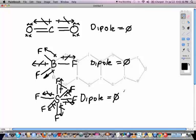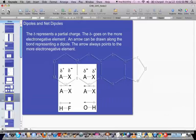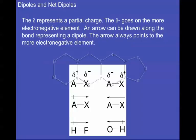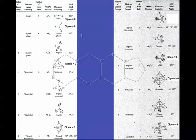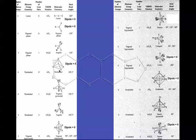For any molecule that has just atoms around the central atom, the dipole will always be zero. Looking at the summary of all geometries: linear, trigonal planar, tetrahedral, trigonal bipyramidal, and octahedral all have a dipole of zero when only atoms are present.